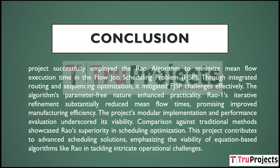In conclusion, the RAW algorithm was successfully used to minimize flow execution time in FJSP. It significantly minimizes FJSP difficulties through integrated routing and sequencing optimization. The algorithm's parameter-free nature increases its usability. Iterative refinement lowered mean flow time significantly, suggesting greater manufacturing efficiency. The modular execution and performance evaluation demonstrated the project's viability. RAW's excellence in scheduling optimization was demonstrated when compared to standard methods, emphasizing the usefulness of equation-based algorithms in addressing complex operational difficulties.